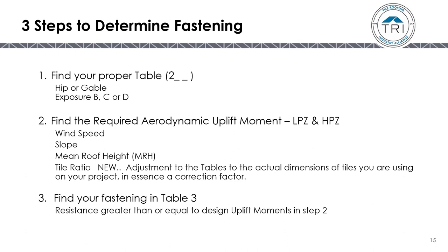There are three steps to determine fastening. Step one: find your uplift moment table — you'll need to know if it's a hip or gable roof and the exposure B, C, or D. Step two: find the design uplift moment for both the low-pressure zone and high-pressure zone, using wind speed, slope, mean roof height, and tile ratio — a correction factor for the actual tile dimensions. Step three: find your fastening in Table 3, finding a resistance greater than or equal to the design uplift moment from step two.